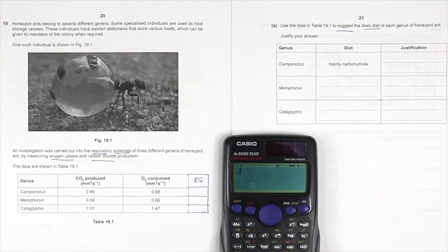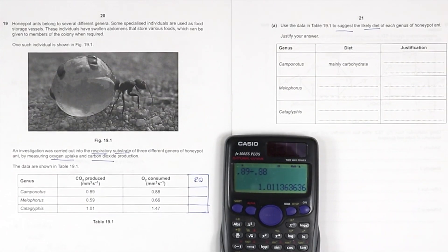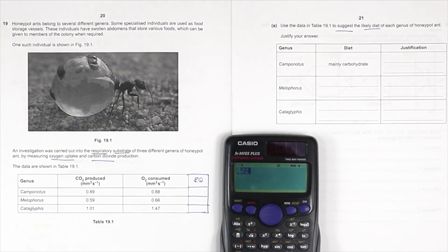So we've got 0.89. Am I doing this the right way? Now for this one, it doesn't really matter because basically it's 1.